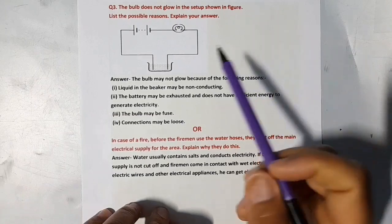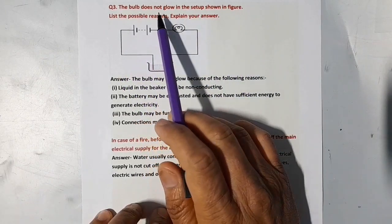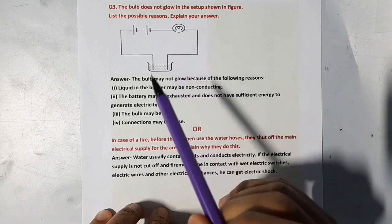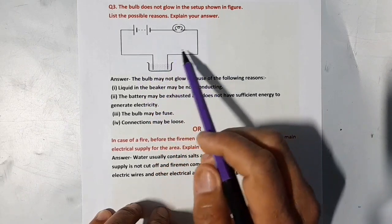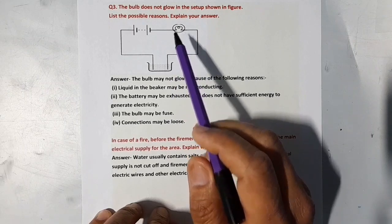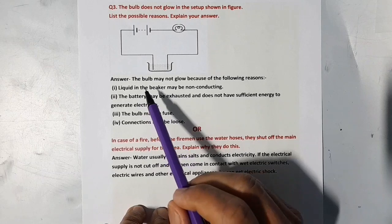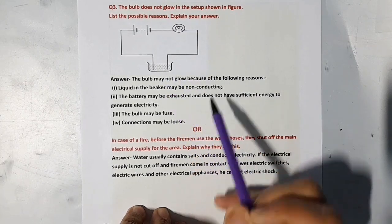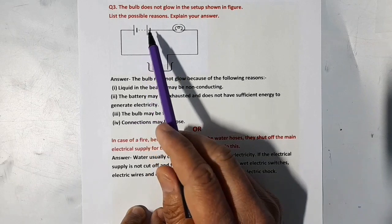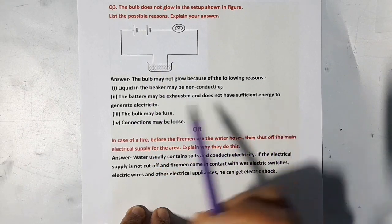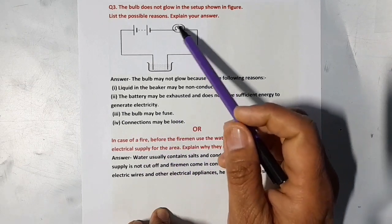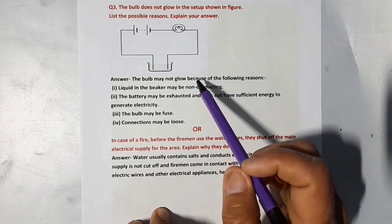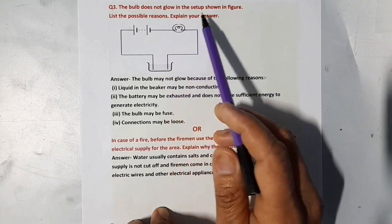Now we come to our next question. The bulb does not glow in the setup shown in figure. List the possible reason. Explain your answer. We see this setup and in this setup bulb is not glowing. What might be the possible reasons? The bulb may not glow because of the following reasons: Liquid in the beaker may be non-conducting. The battery may be exhausted and does not have sufficient energy to generate electricity. The bulb may be fused or connections may be loose.